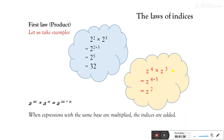Now let's start learning the laws of indices. The first law is the Product Law. We take a variable a. When we multiply expressions with the same base a, we add their powers. So a to the power m multiplied by a to the power n equals a to the power m plus n.